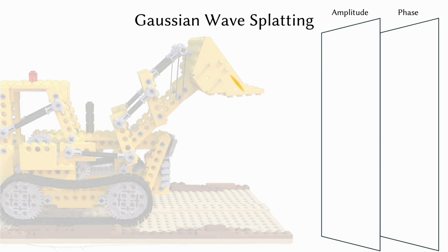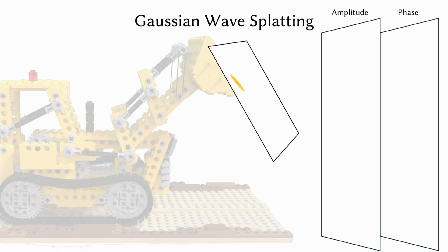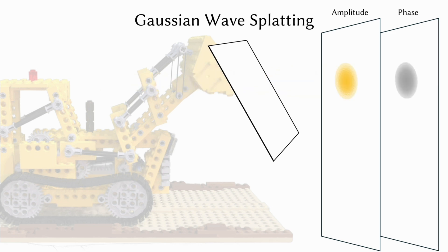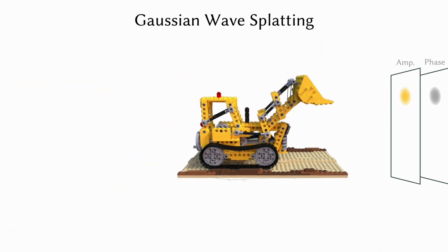For each Gaussian primitive, we use the rotation, scale, and translation to transform between a canonical 2D Gaussian and the optimized Gaussian. We use this transformation to determine the light that would be diffracted from the optimized Gaussian to the hologram plane. By performing this per-Gaussian computation in parallel, we can compute the full hologram corresponding to the 3D scene.